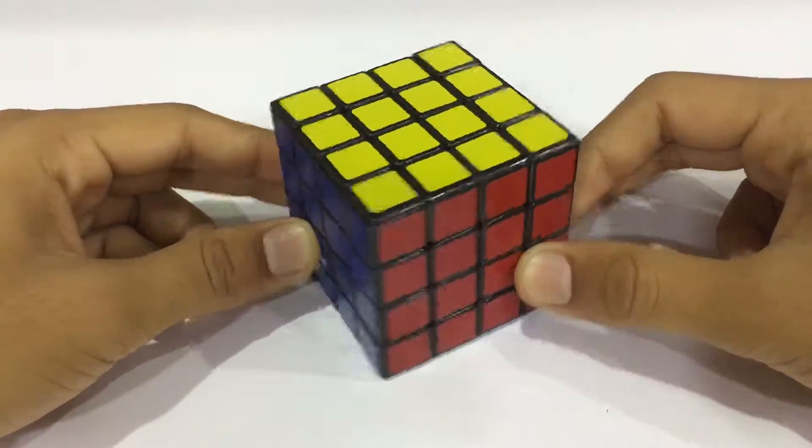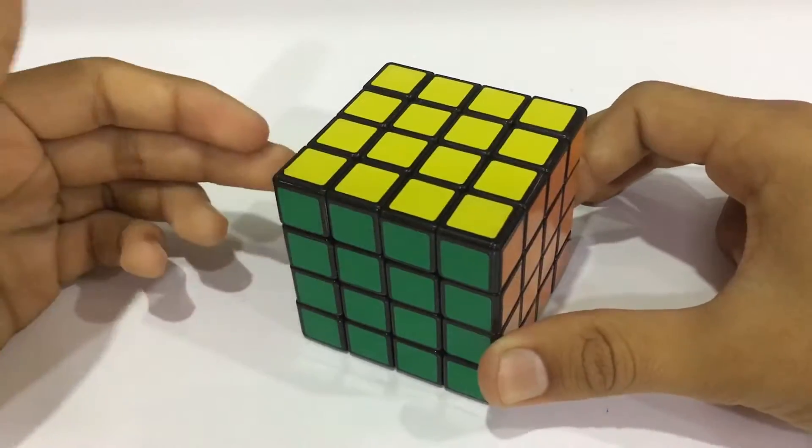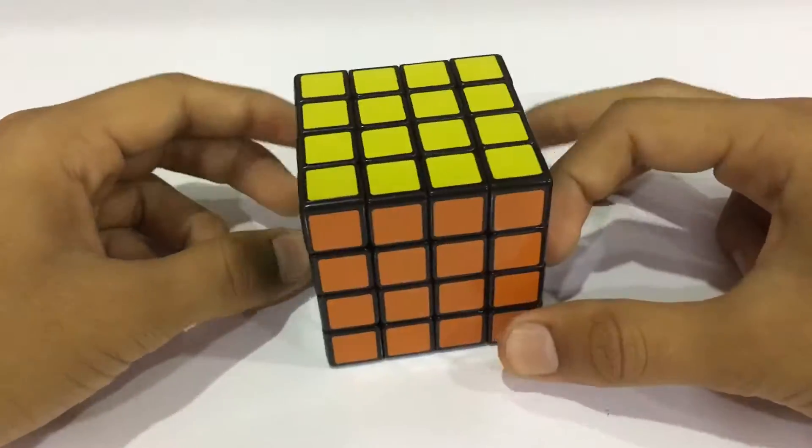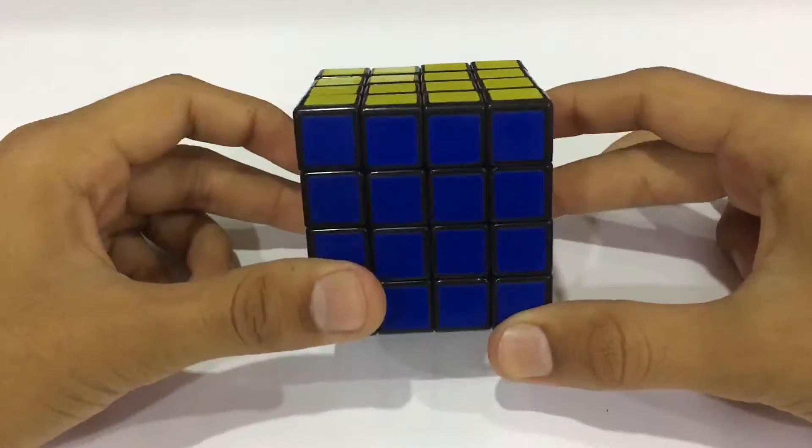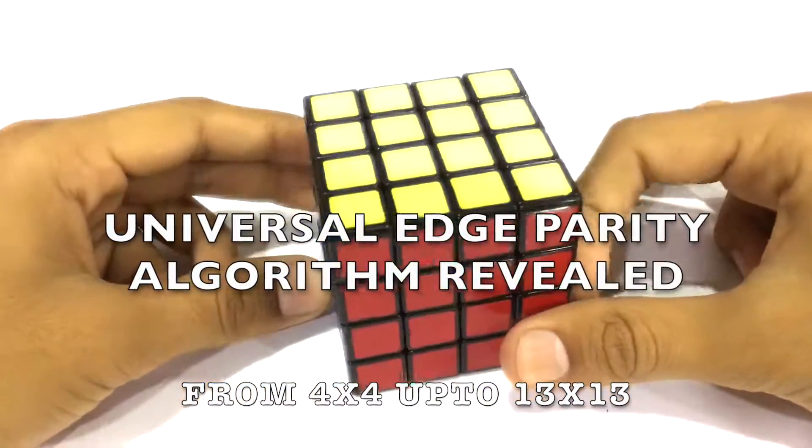In the sense, you can solve the edge parity of the 5x5, the 6x6, the 7x7, the 8x8, the 9x9, the 10x10, up to 13x13. You'll be wondering how. So here I go. The universal edge parity algorithm reveals!